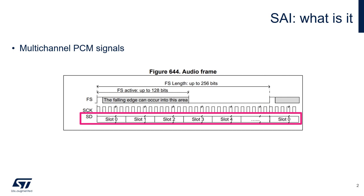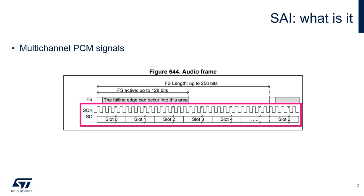The SAI peripheral can be configured to follow the I2S standard. In this case, the microphone acquisition is exactly the same as for I2S, and we are going to use just two signals: the clock and the data.